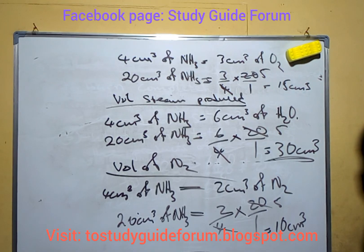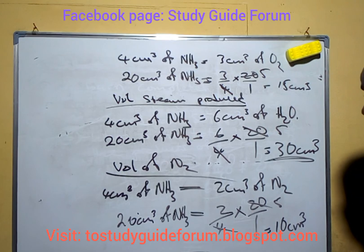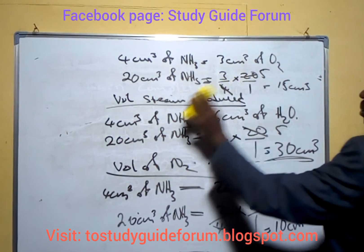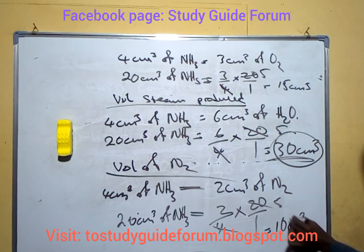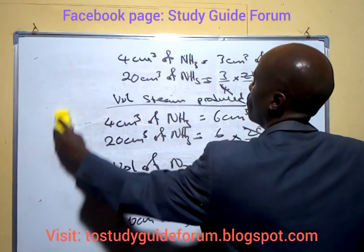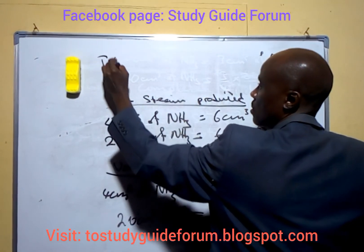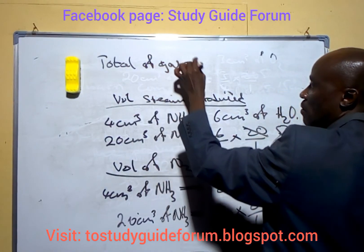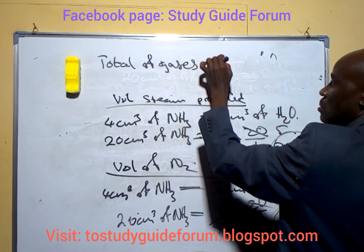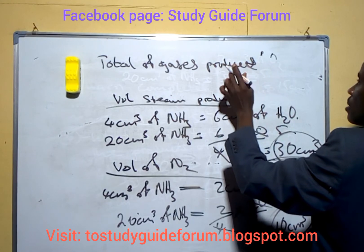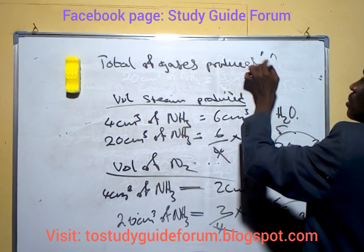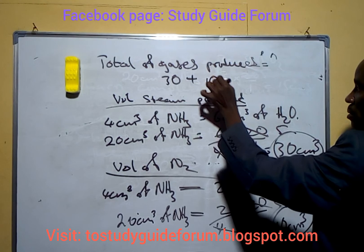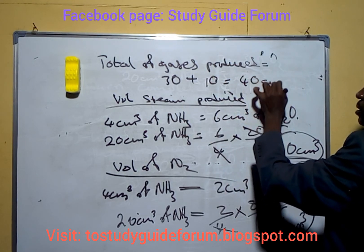So based on the second question — the total volume of gases produced — we have 30 cm³ of steam and 10 cm³ of nitrogen. The total volume of gases produced will be 30 + 10 = 40 cm³.